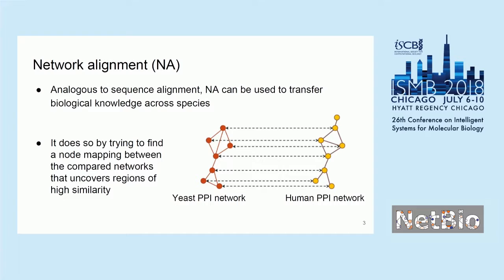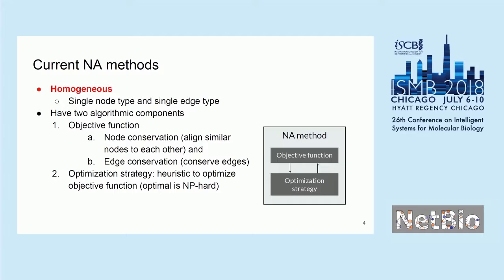Network alignment has a lot of applications. For example, we can study human aging, which is very difficult to do experimentally. Current network alignment methods are many are homogeneous, which means they deal with networks containing a single node type and a single edge type. Generally, they have two algorithmic components.